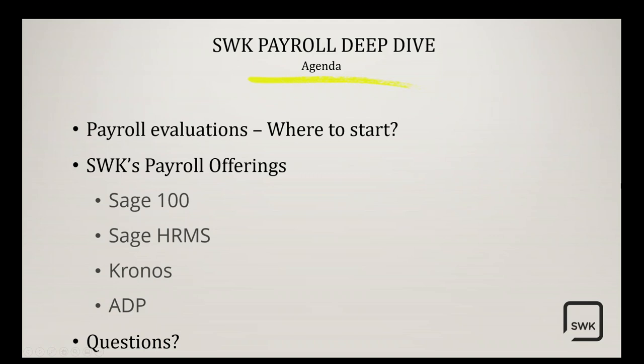Just a brief agenda for our presentation today. Before we get into the offerings, we want to go through where do we start from our payroll evaluations — what are the right decisions, what are the questions to ask, what could be the right fit for you. From there, we'll go through our payroll offerings: Sage 100 Payroll, Sage HRMS Payroll — our two on-prem or install-based systems — and then also Kronos and ADP within our portfolio. Then we'll have questions at the end, so feel free to type them in along the way.